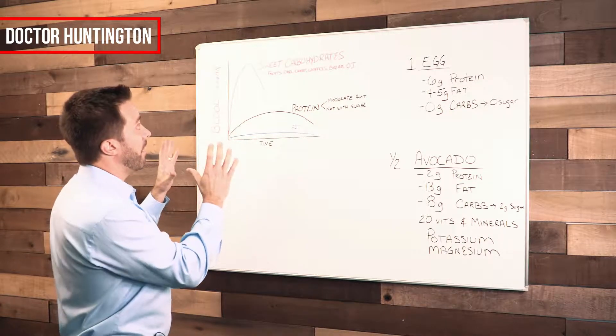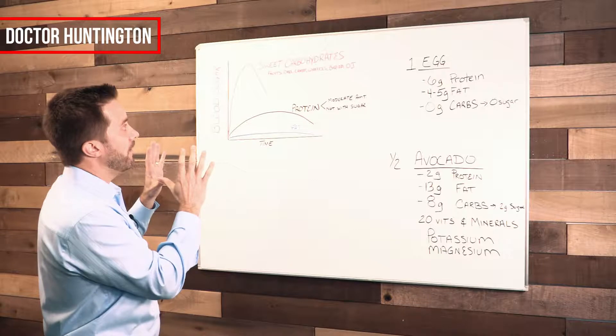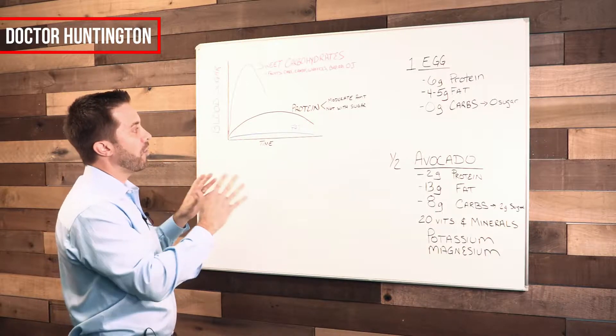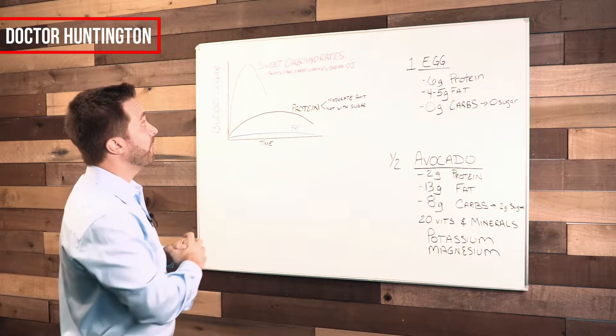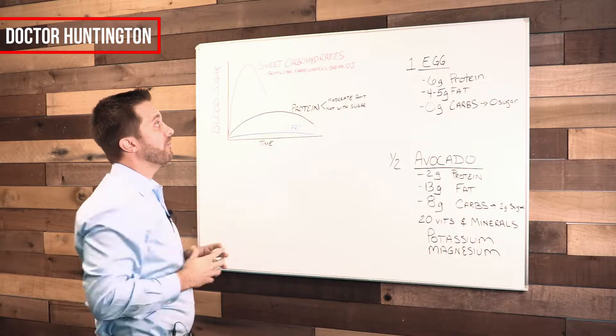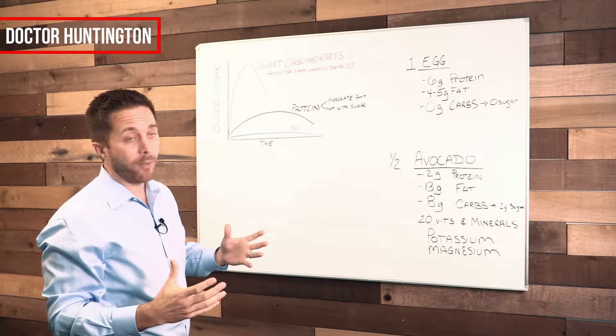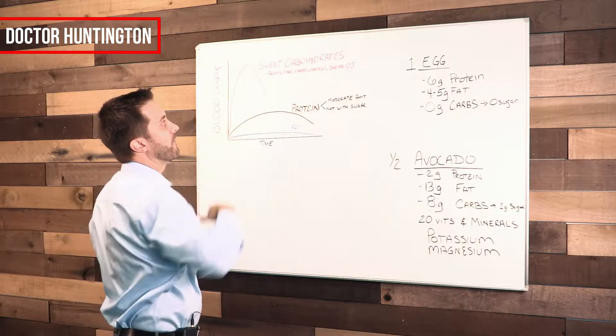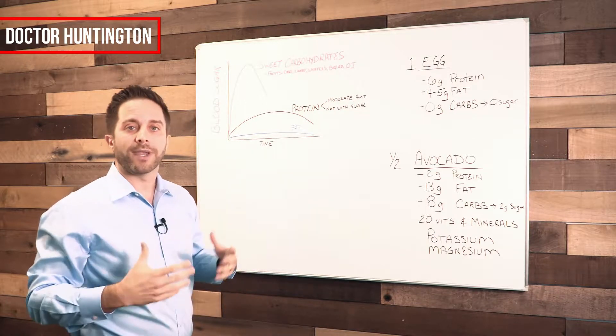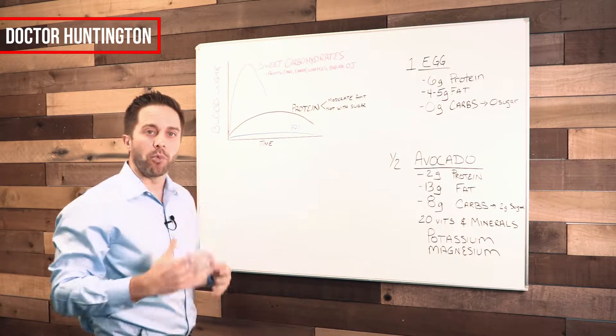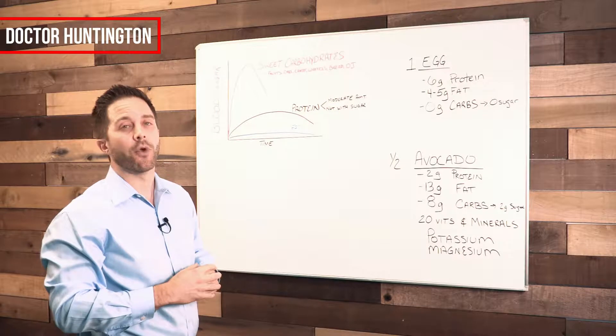I'm covering three foods: carbohydrates, proteins, and fats. Specifically, when we talk carbohydrates, there's of course good carbs and bad carbs. We're talking the sweet carbohydrates - your fruits, your cake, your candy, your waffles, your bread, your fruit juice, orange juice, those kinds of things.